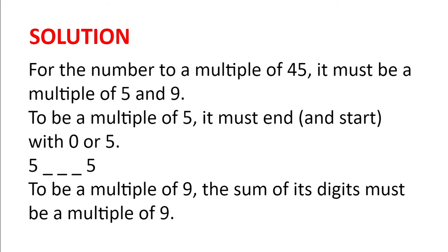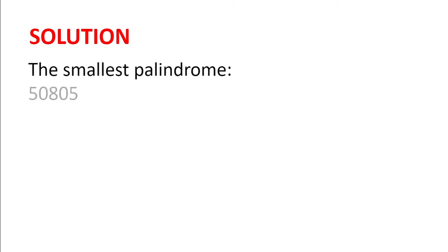And so the smallest such palindromic number, to find that, we first choose the smallest thousands digit possible, and see if we can find such palindromic number to be a multiple of 9. We choose 0, because that's the smallest digit. 5 0 something 0 5. So far, its sum is 5 plus 5, which is 10. And the next largest multiple of 9 is 18. 18 minus 10 is 8. And so the smallest palindrome is 50805.